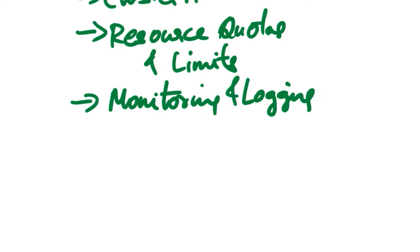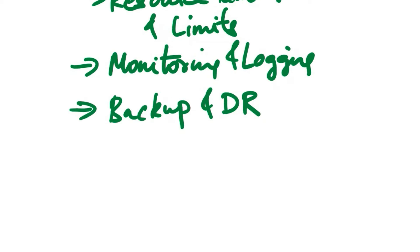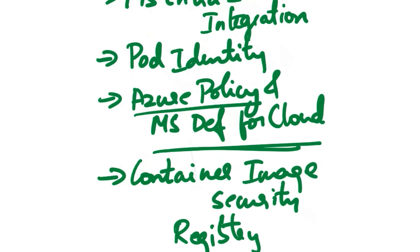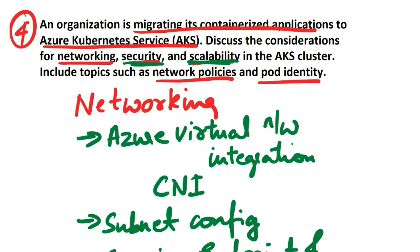Set up monitoring using Azure Monitor to collect and analyze telemetry data from AKS, and utilize Azure Log Analytics for centralized logging and troubleshooting. Implement backup strategies for critical configurations and data, and plan for disaster recovery scenarios to minimize downtime in case of failures. By addressing these considerations, organizations can ensure a well-architected and secure AKS cluster optimized for networking, security, and scalability when migrating containerized applications to Azure.